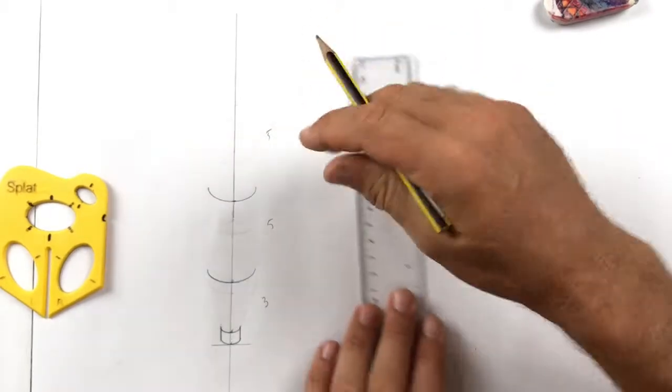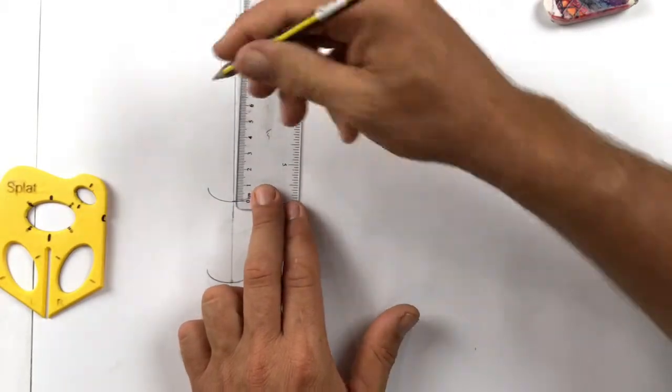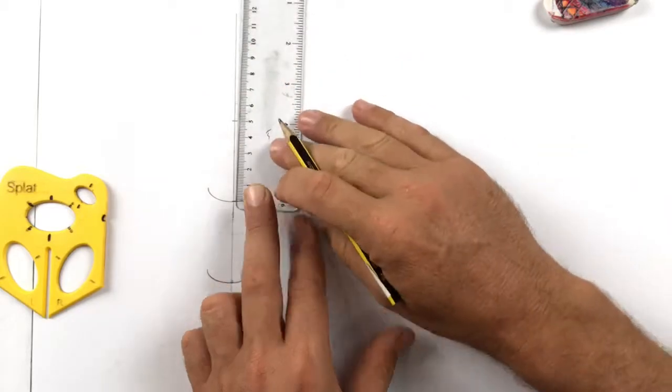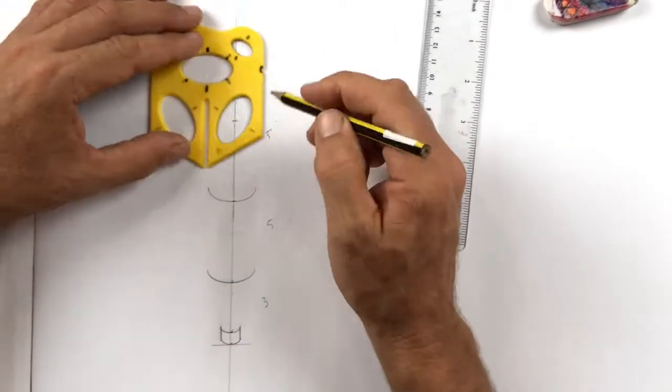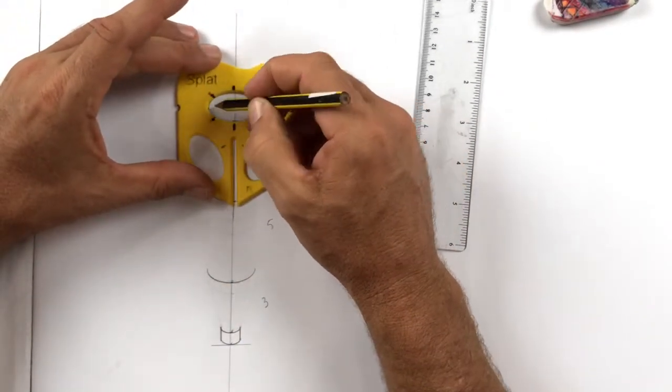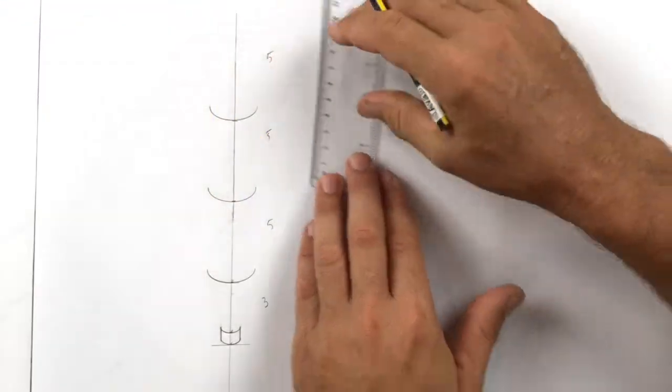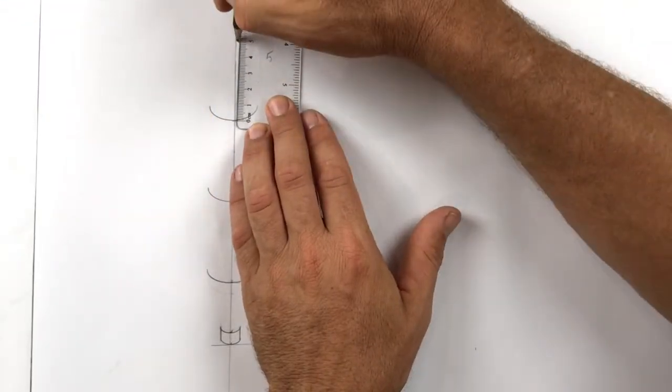So we're going to come up 5cm again. And larger ellipse. Bottom half. This will make sense in a sec, guys.